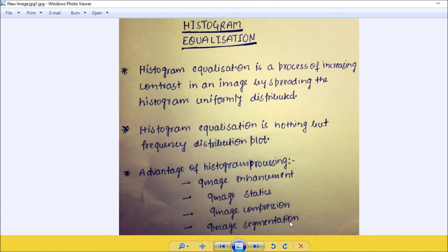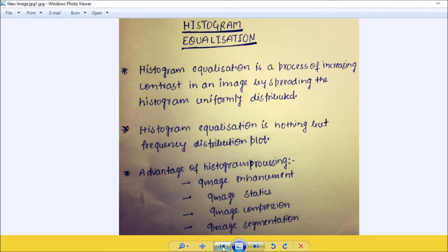Now let me tell you, in histogram equalization actually kya hota hai ki agar aapka koi gray level ka image hai aur uski intensity hai wo proper way mein distribute nahi hai, toh after histogram equalization kya hota hai ki us image ki jo intensity hai wo distribute ho jati hai aur jo image ki brightness hai, jo contrast hai wo badh jati hai. In simple way, we can say image enhancement.